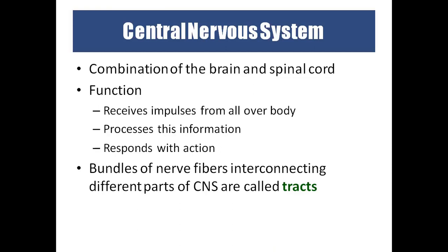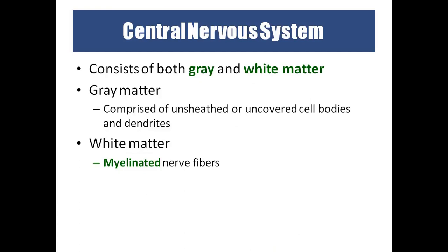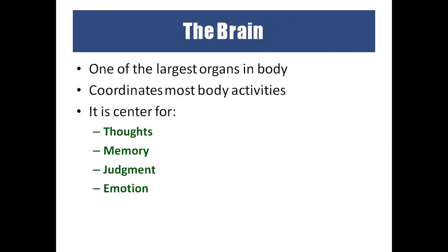The central nervous system — brain and spinal cord — receives impulses from all over the body, processes the information, and responds accordingly. Bundles of nerve fibers interconnecting are called tracts. In the brain and spinal cord we have two types of matter: gray matter, which contains dendrites and cell bodies, and white matter, which contains myelinated axons. The myelin is a fat covering, which is why white matter appears white.